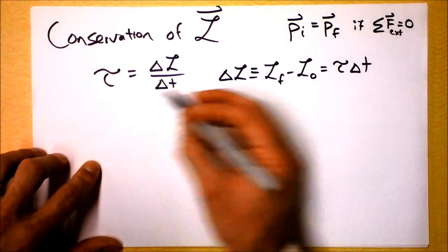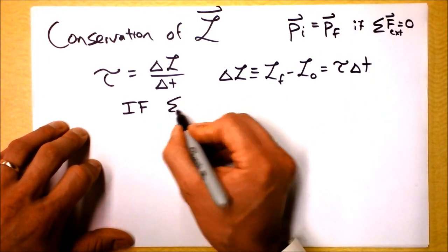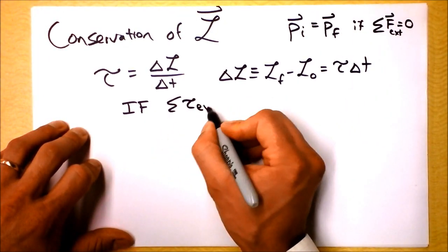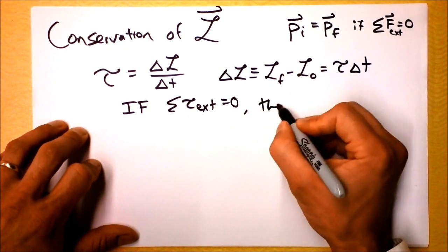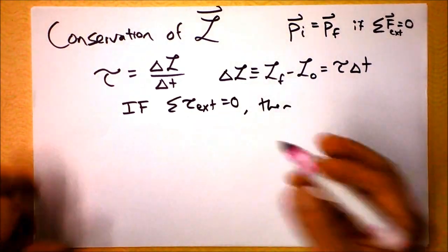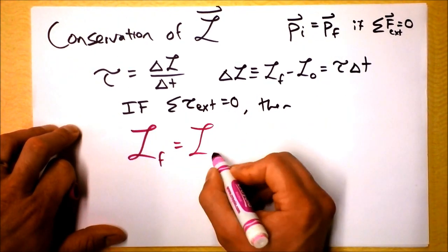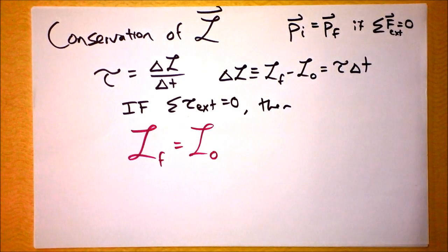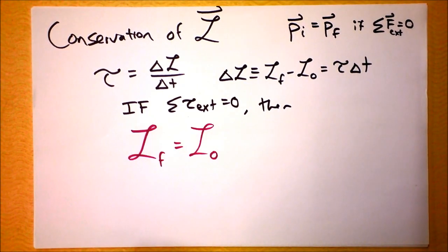So we can then write that if net torque external equals zero, then, here we go, L final is L initial. Or maybe you want to switch it around when you're working with it, but now you've got yourself another conservation law, that angular momentum for a system will be conserved. So we can write a really quick example of that.